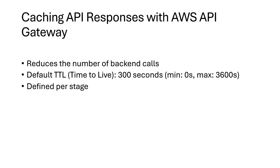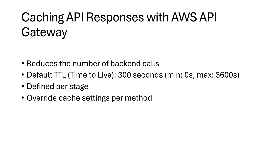You can also override cache settings per method. It's not only stage-specific — you can dig deeper into method levels, and for each method you can override the cache settings. This gives you final control over what gets cached and for how long. Finally, you can also do cache encryption, adding an extra layer of security for your cache data.